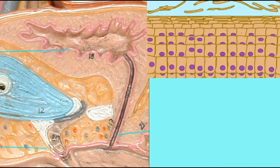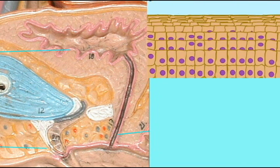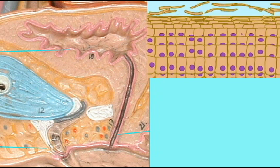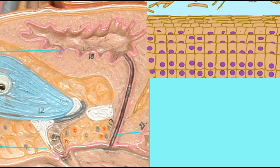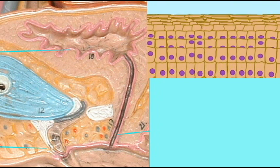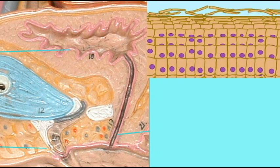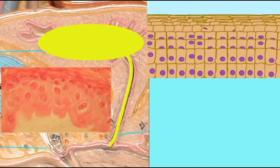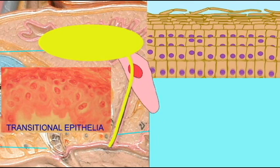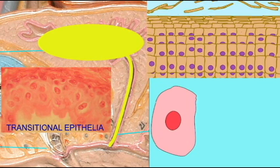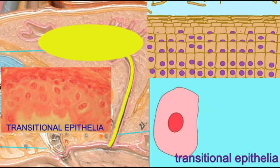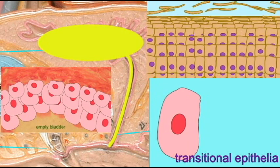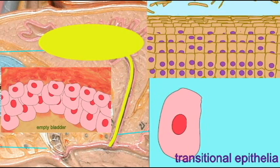Epithelial cells undergo a rapid rate of division, and therefore they can be sloughed off into urine and present in a urine sample. Transitional epithelial cells may have been lost from the lining of the bladder or portions of the ureters.